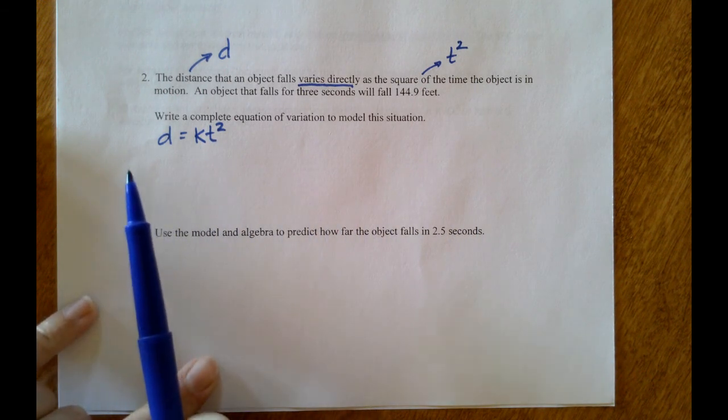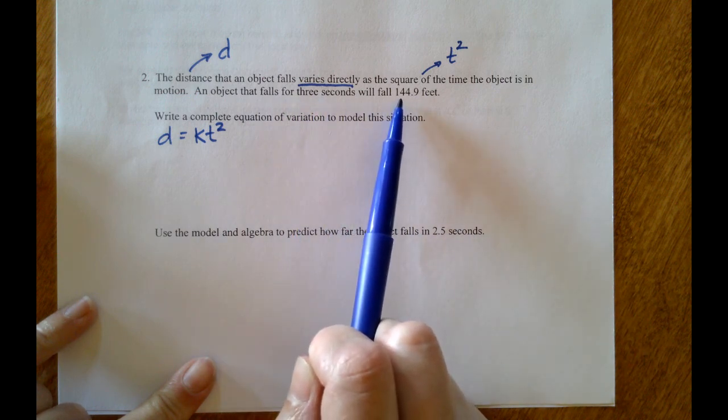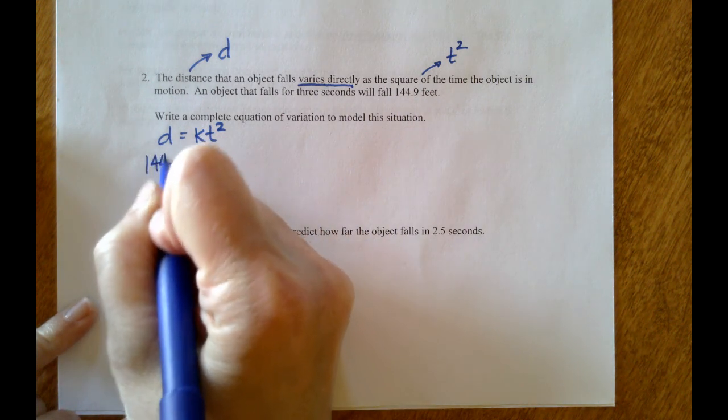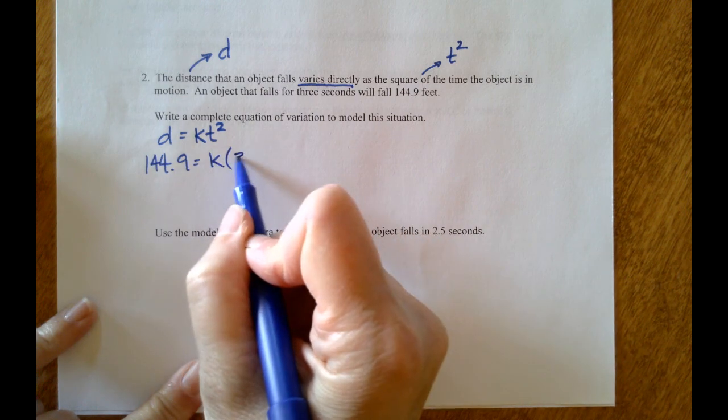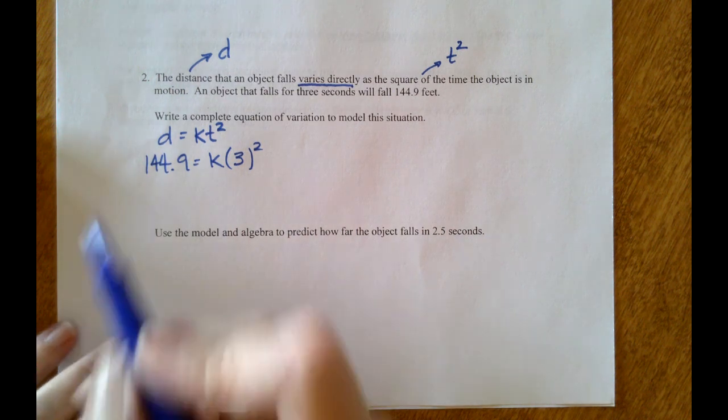Let's fill in the fact pair that we know: an object that falls for three seconds, that's the t value. 144.9 feet is the d value. 144.9 equals k times 3 squared. 3 squared is 9.